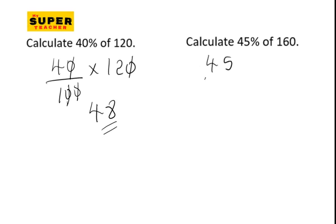45 over 160... oh sorry, 45 over 100. So you have to be very careful. Times, you know, you're dividing your percentage by 100, right? Because that's 100 percent. So times the quantity, zero cancel zero.